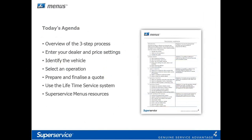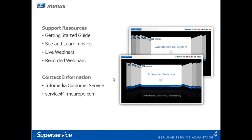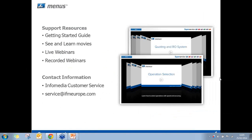Today's agenda: we'll do an overview of the three-step process, entering your dealer and price settings, identifying a vehicle, selecting an operation, how to prepare and finalise a quote, and how to use the lifetime self-service system. Then we'll be going on to the Super Service Menus resources. With that all done, I'll pass you over to our presenter James.